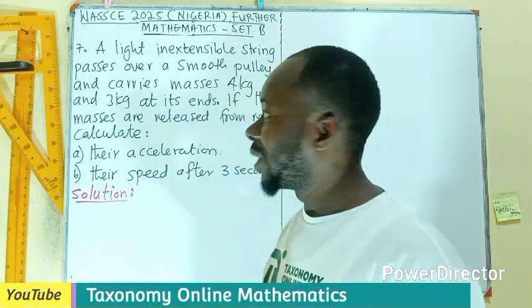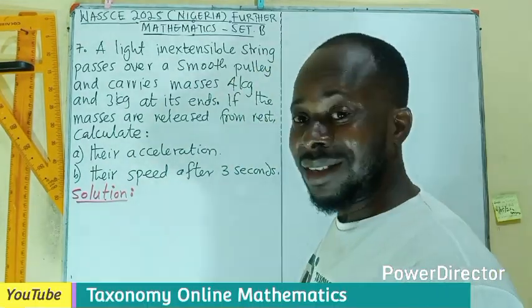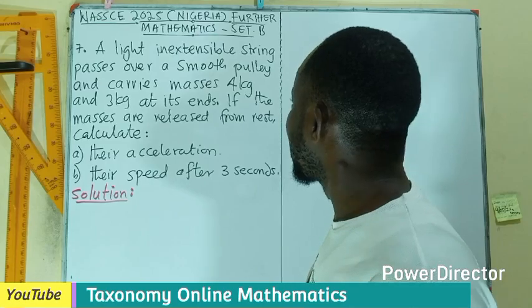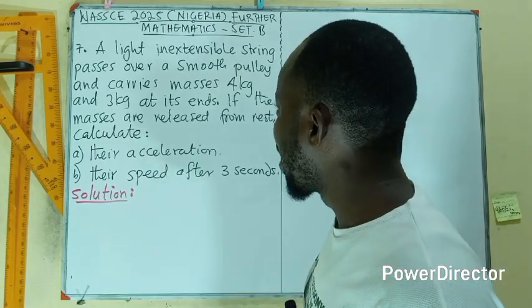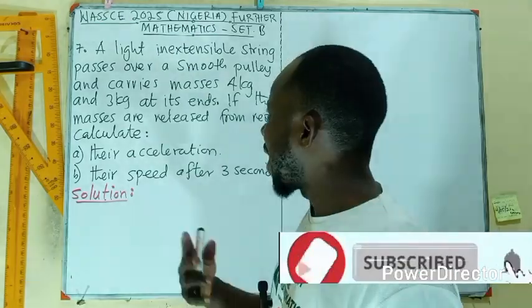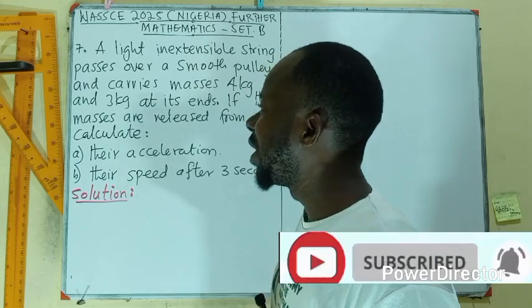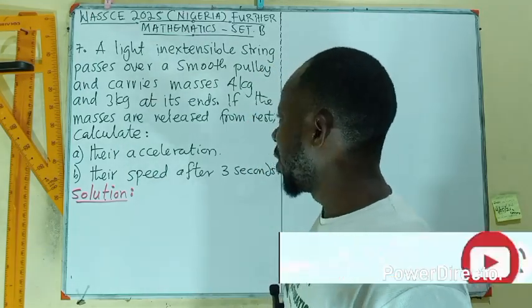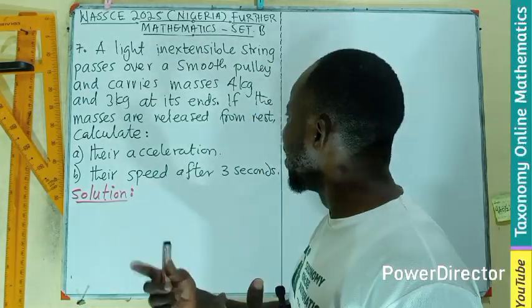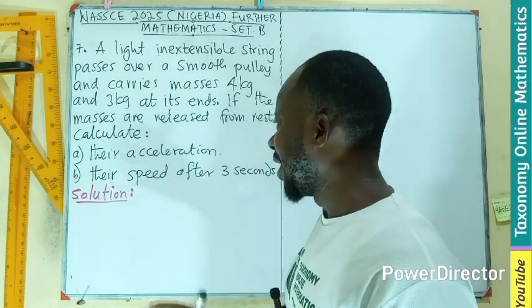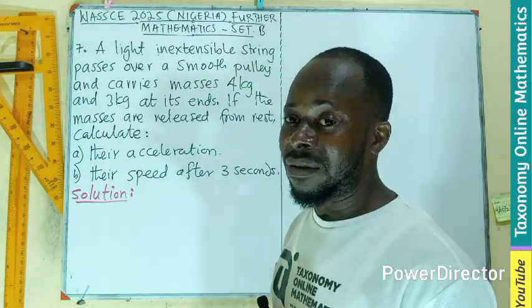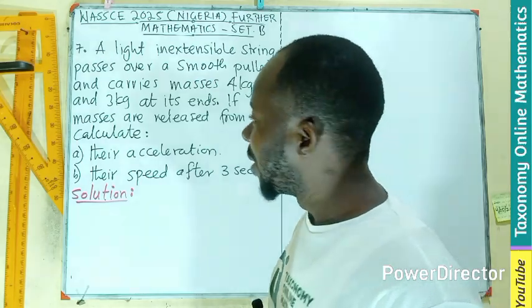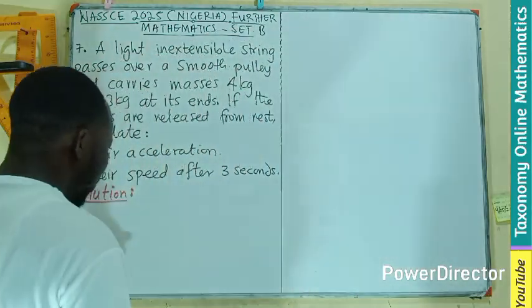Welcome. Here is question number seven. A light inextensible string passes over a smooth pulley and carries masses of 4 kg and 3 kg at its ends. If the masses are released from rest, we have to find the acceleration and the speed after three seconds. This is a mechanics and dynamics motion problem.